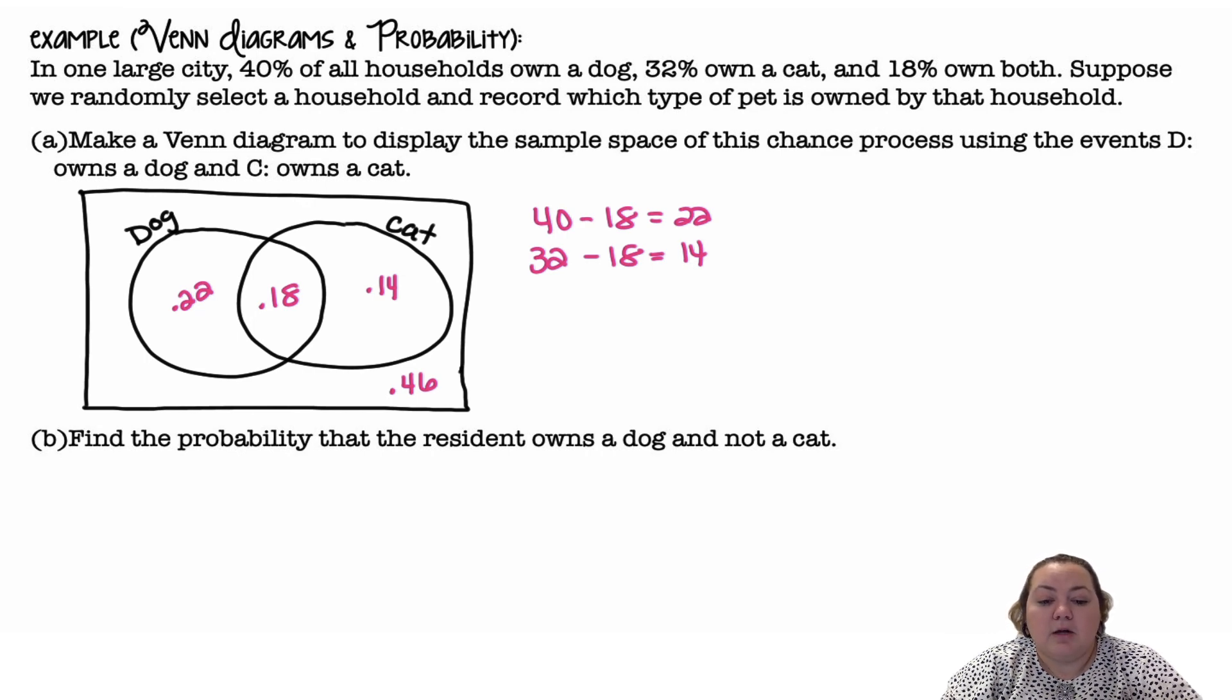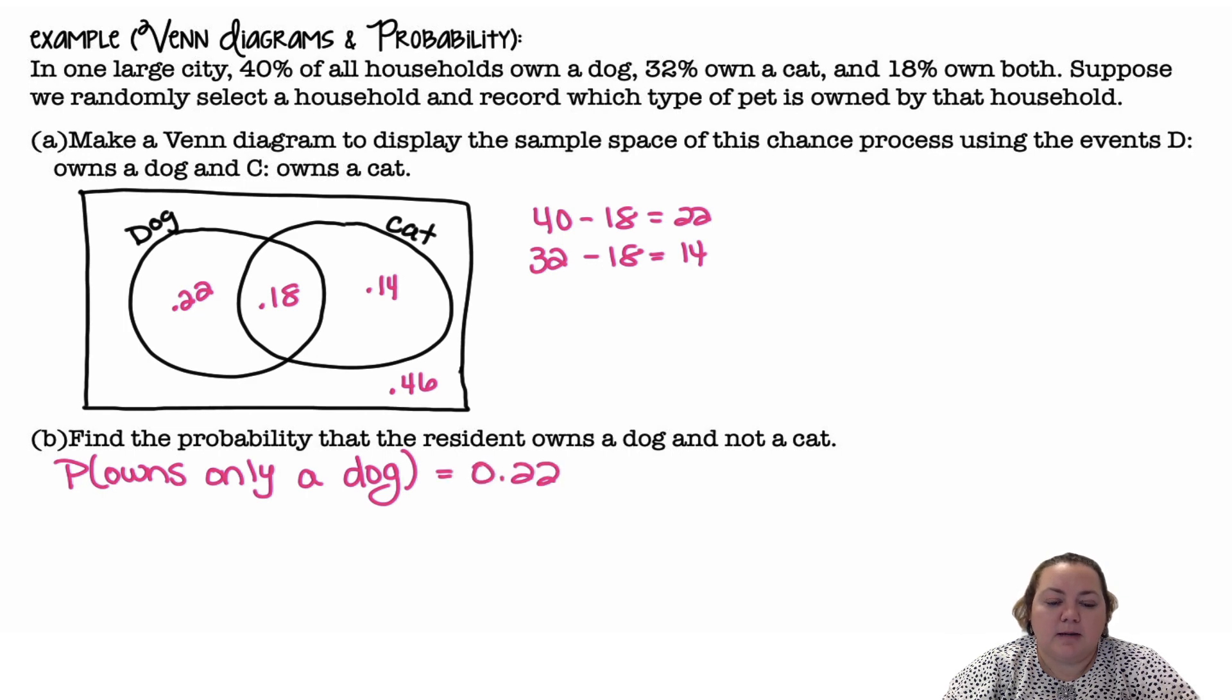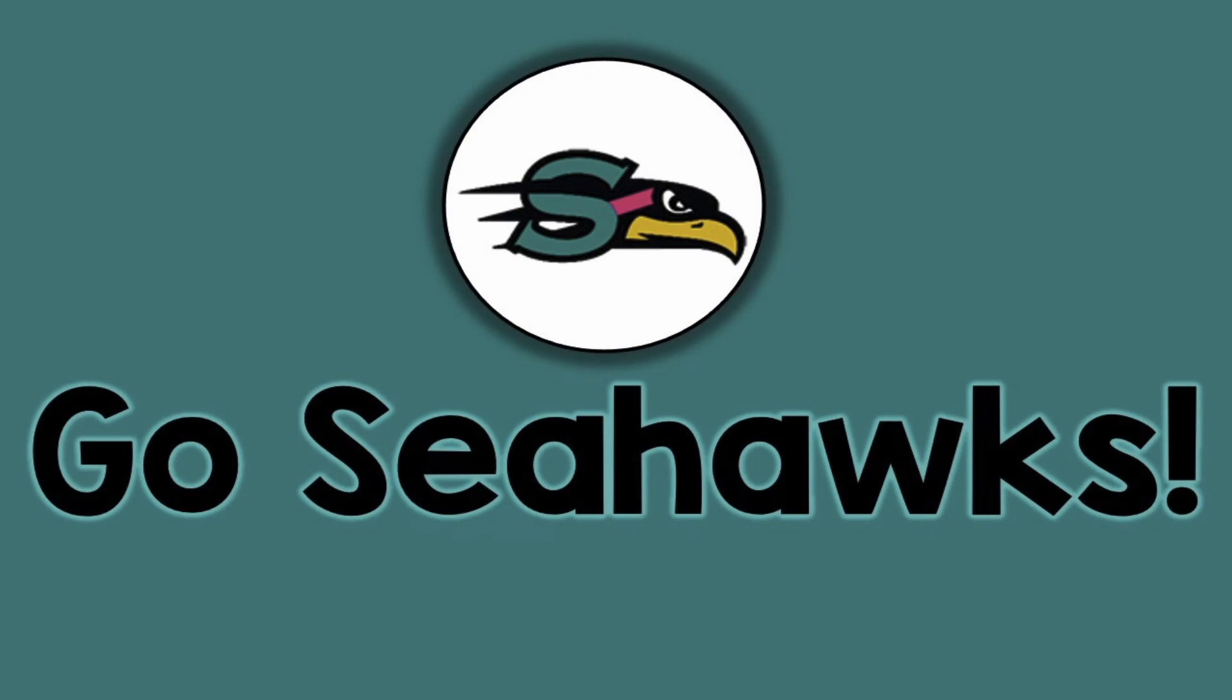Find the probability that a resident owns a dog and not a cat. So that would mean that they own only a dog, and so that would be the 0.22, 40% minus the 18%. Go Seahawks!